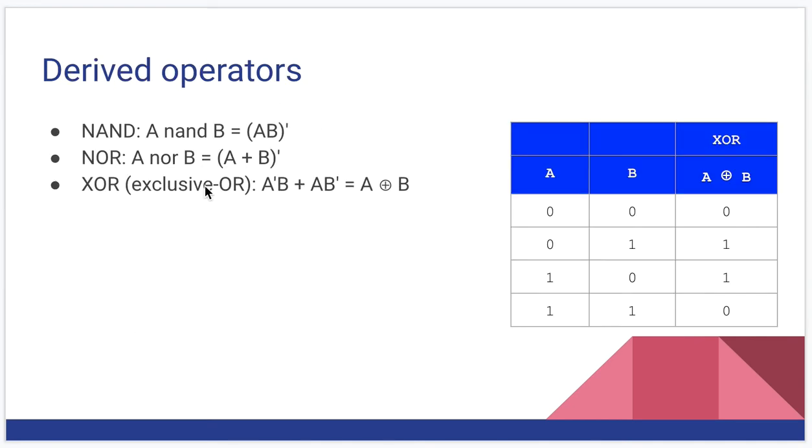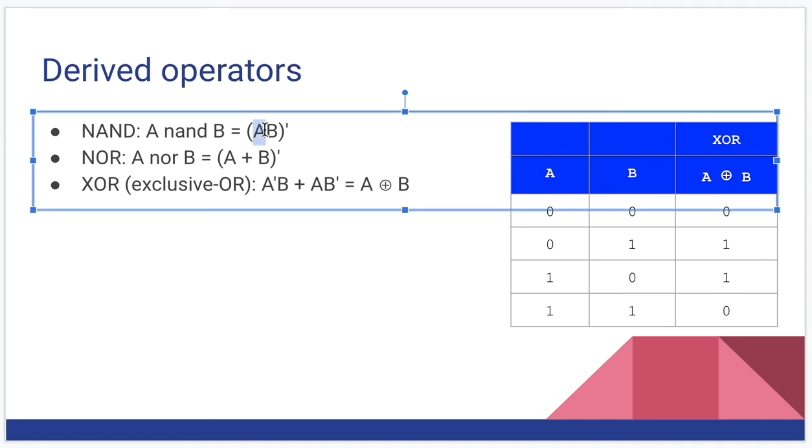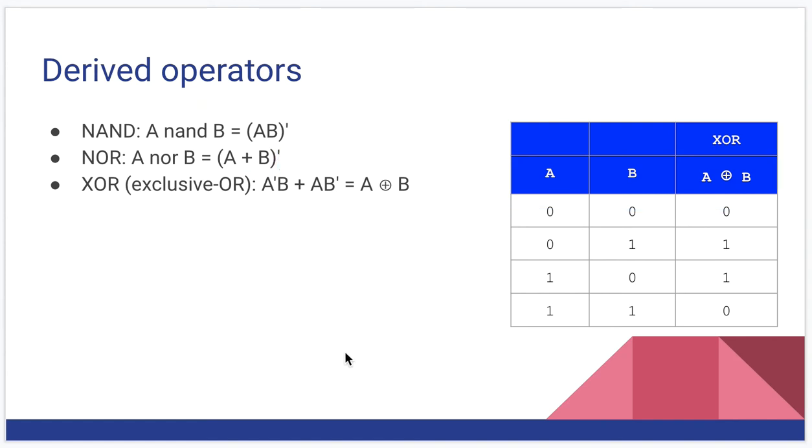There's a few derived operators that you'll hear talking about. NAND is where you take A and it with B and then the inverse of that result. So the parentheses say, do the and first, then take the not of that. NOR, take two things, or them together, and then take the not of that result. And you'll see those around. We really won't use NAND and NOR.